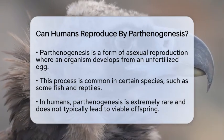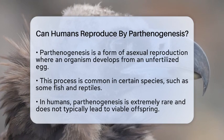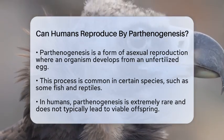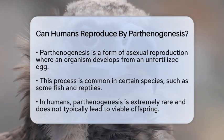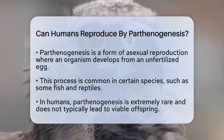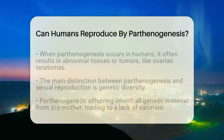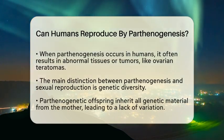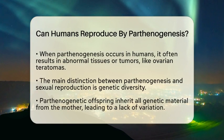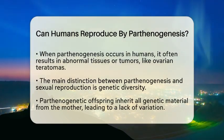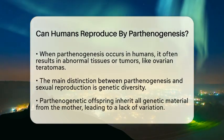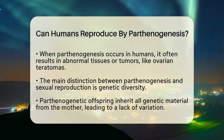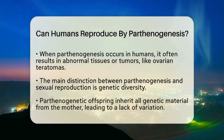In biology, parthenogenesis involves the development of an embryo from an unfertilized egg. This can happen naturally or through artificial means. However, in humans, parthenogenesis is extremely rare and does not lead to viable offspring. When it does occur, it often results in abnormal tissues or tumors, such as ovarian teratomas, rather than a fully developed individual.